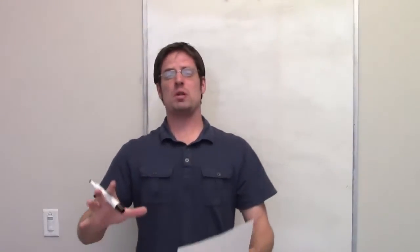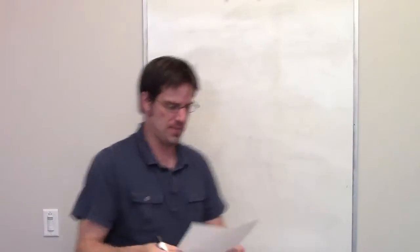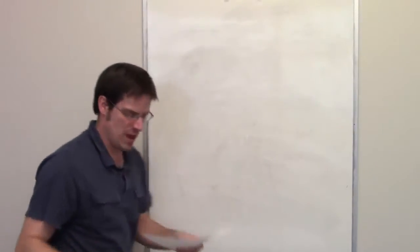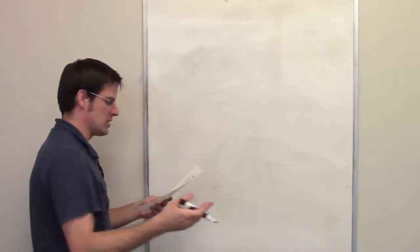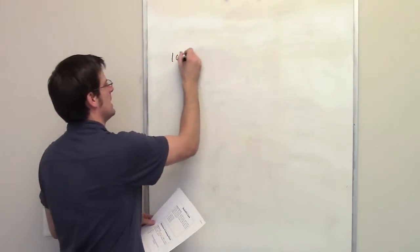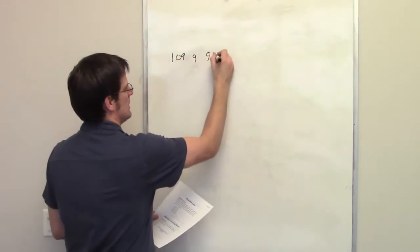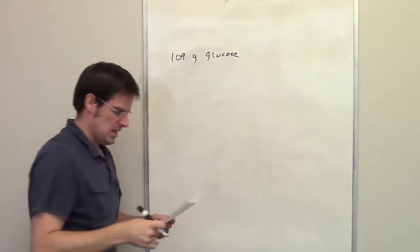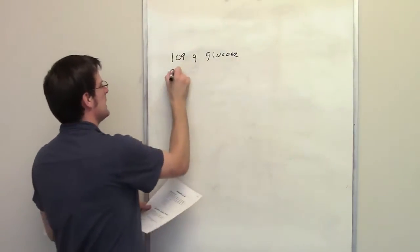This beautiful question involves doing a problem with Raoult's Law. It asks us to calculate the vapor pressure of a solution made by dissolving 109 grams of glucose in 920 milliliters of water.